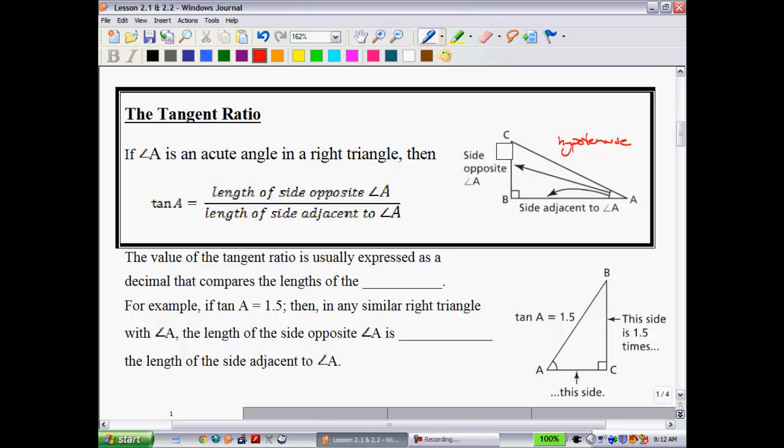All right, so let's jump into this. The value of the tangent ratio is usually expressed as a decimal that compares the lengths of the sides together. So we're always saying that whatever's on top right here, whatever that ratio is, that's going to be what the relationship is to the adjacent side.